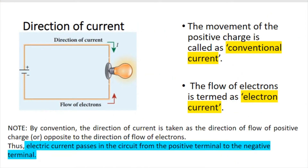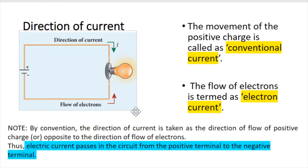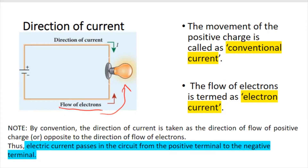Next, the direction of current. In a circuit diagram, the current direction is mentioned as from the positive terminal to the negative terminal — this is known as the conventional direction of current. Before the discovery of electrons, scientists decided that current flows due to positive charges, from plus terminal to minus terminal. But after the invention of electrons, it was found that electrons actually flow from the negative terminal to the positive terminal. Still, we follow the conventional direction of current only.